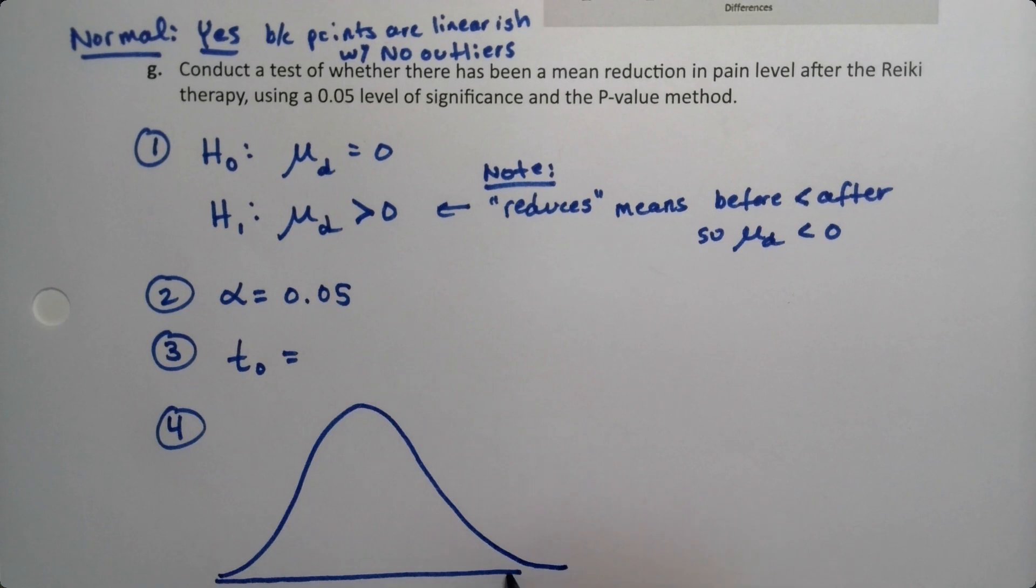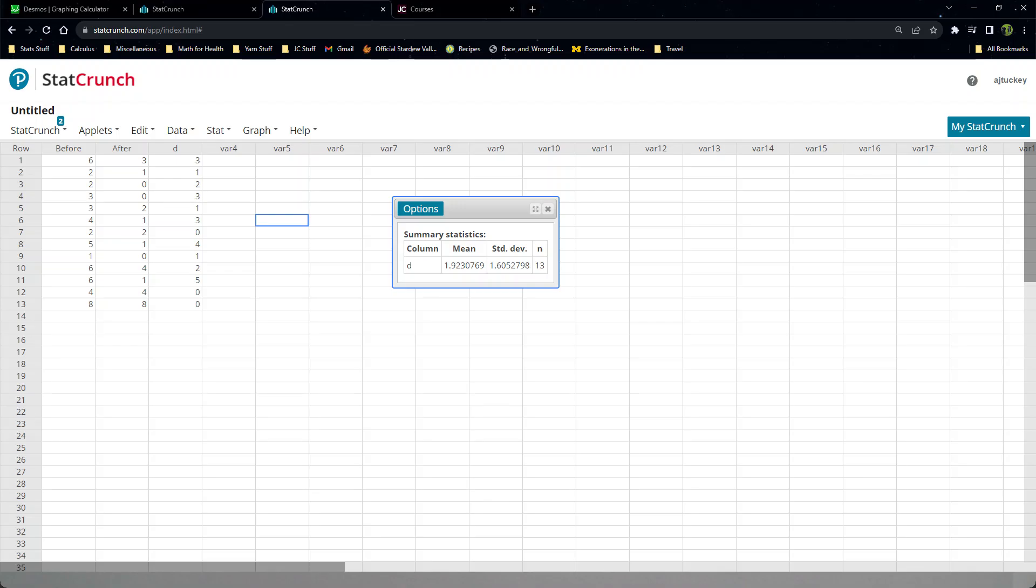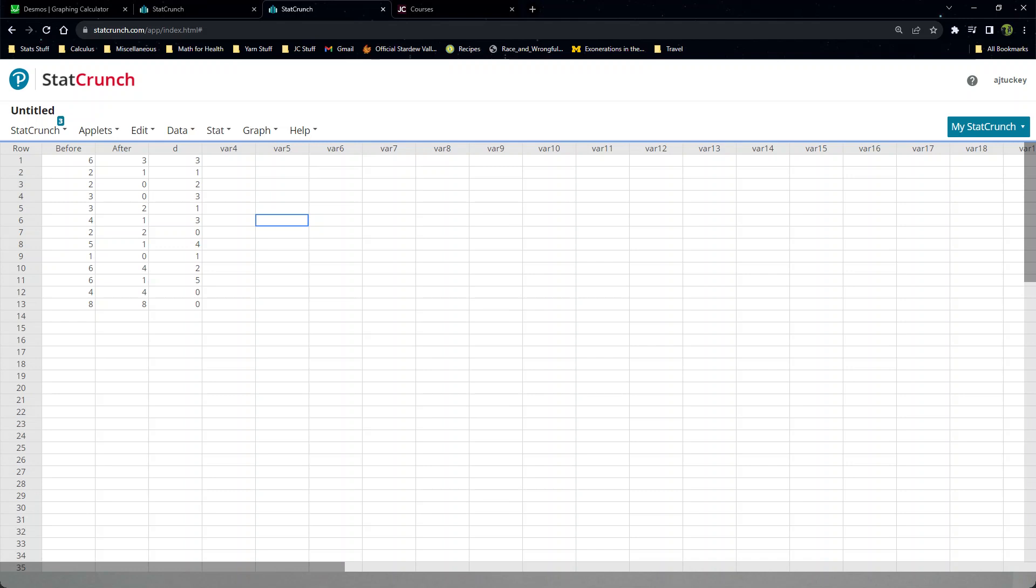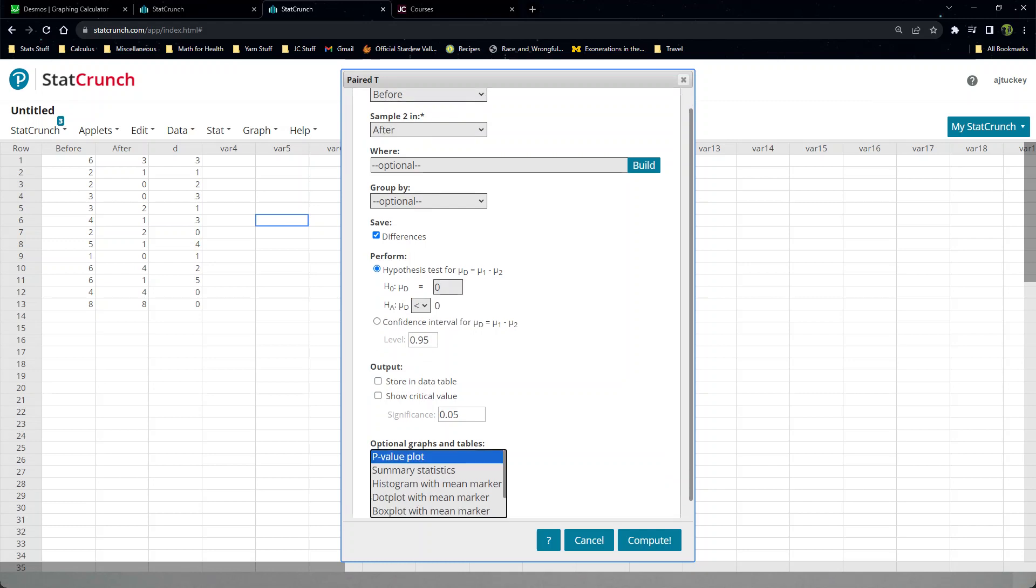Let me grab technology. If you remember, I ran a test earlier but it was not a good test. When I ran the test earlier I went to stat, t-stat paired. I said before, I said after. I saved the differences. That was my whole reason for doing it. And then I ignored everything else and just said compute. But now I don't want to ignore everything else. I'll show you what happens because it's just going to put them into variable four. It'll just repeatedly do differences for you. So I'll save the differences again for fun. And then I'm going to change this to a less than. So it's mu d equals zero, mu d less than zero. And I don't want to forget down here to do my p-value plot because my p-value plot will give me my step four. And then I say compute.